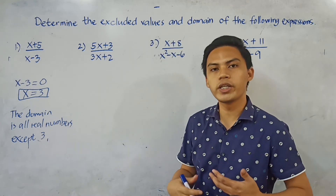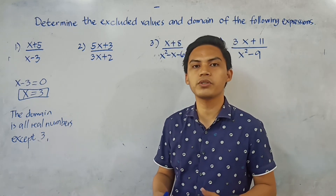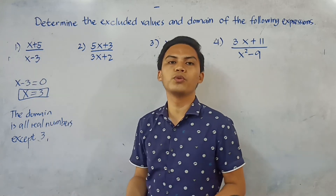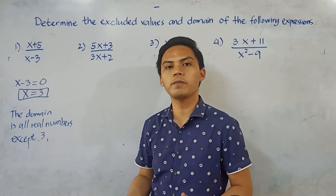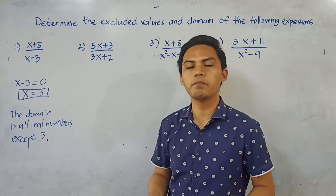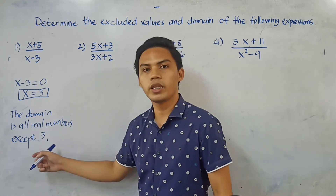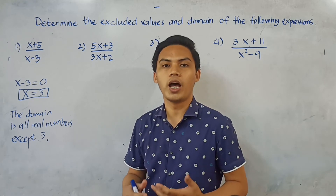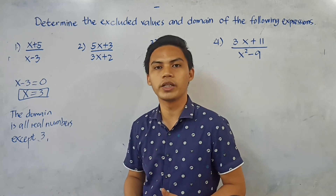The domain being all real numbers except 3 means we can substitute any value for x — positive numbers, negative numbers, fractions, decimals — but 3 is excluded because it would make the rational algebraic expression undefined.